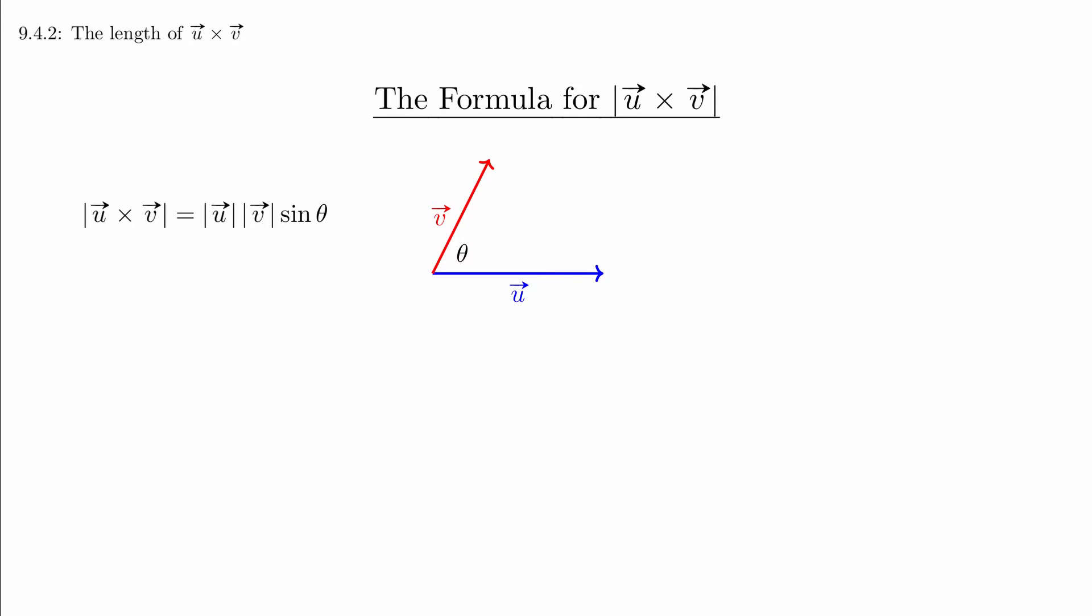The first thing to notice is that if we combine the length of v and sine of theta into a single term, we end up with something geometric. If we draw out the vectors like this, it turns out that the length of v times sine theta gives you the distance from the tip of v to the line formed by u. The same thing works if we combine the length of u with sine of theta instead.